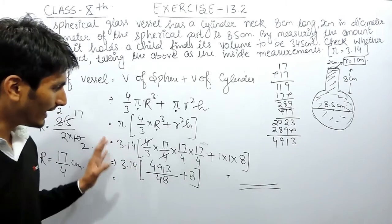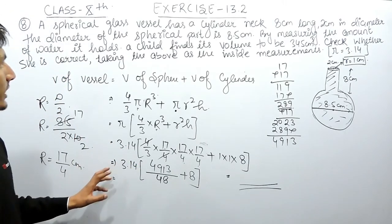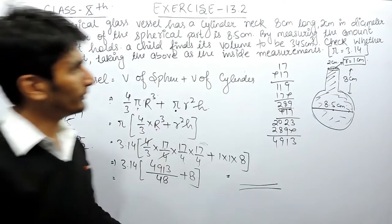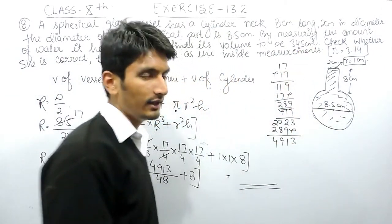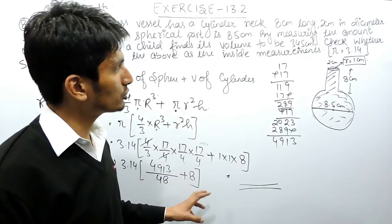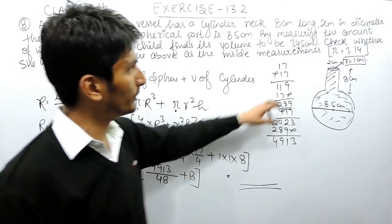I hope you can calculate this. At the last you have to check whether the volume is equal to 345 or not. If the volume is equal to 345, then this child is correct.